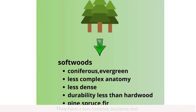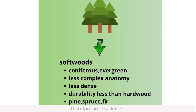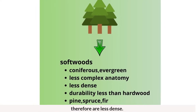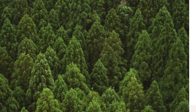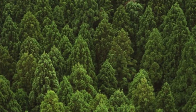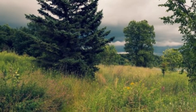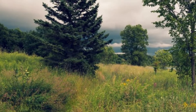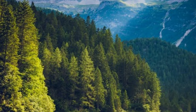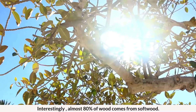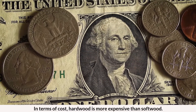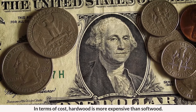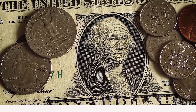Softwoods are coniferous and evergreen. They have a less complex anatomy and therefore are less dense. The durability is less than that of hardwoods. Pine, spruce, and fir are some examples. Interestingly, almost 80 percent of wood comes from softwood. In terms of cost, hardwood is more expensive than softwood.